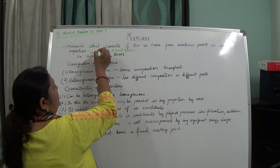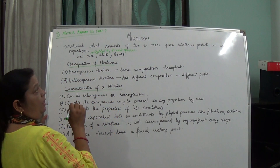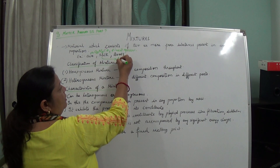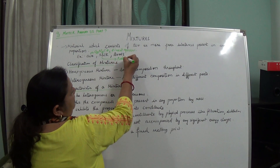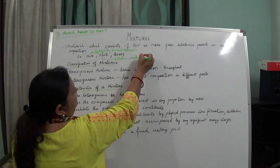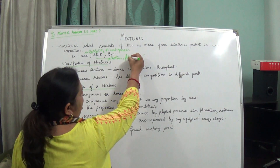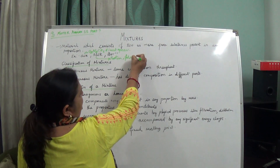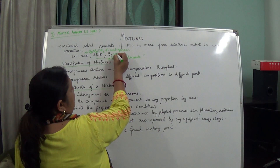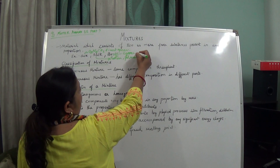Here oxygen exists in the molecular form — O₂. Nitrogen also exists in the molecular form — N₂. Now milk is also a mixture. How can we say it is a mixture? It consists of protein, carbohydrate, fat, and minerals. So it is also a mixture. And brass consists of copper and zinc.